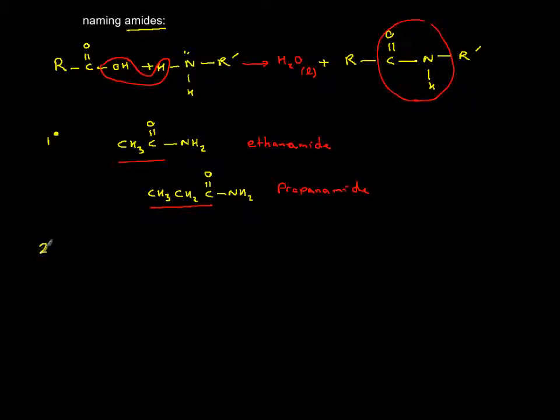Now what happens if you have a secondary? Then we are going to follow the nomenclature of amines. So if you have CH3-C double bond O, now if the nitrogen has another carbon attached to it, this is an example of a secondary. The nitrogen is attached to carbon, or it has one hydrogen left on it.